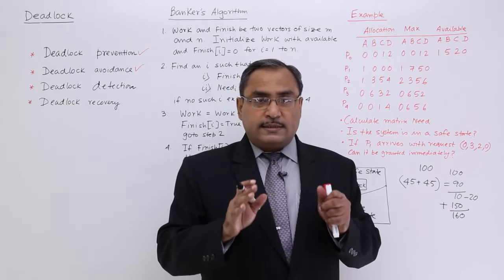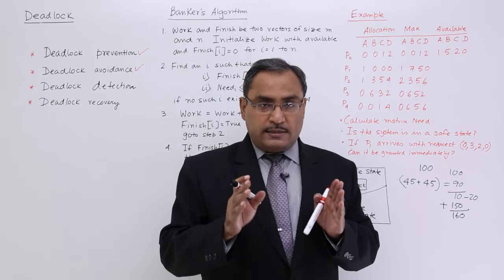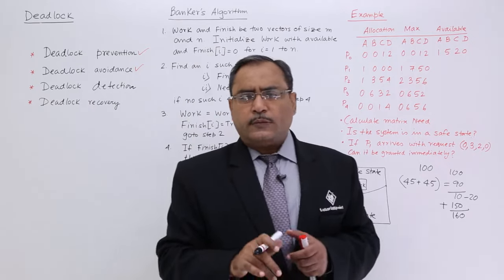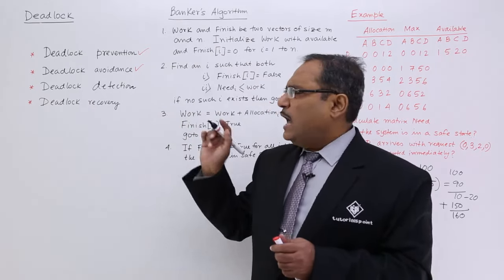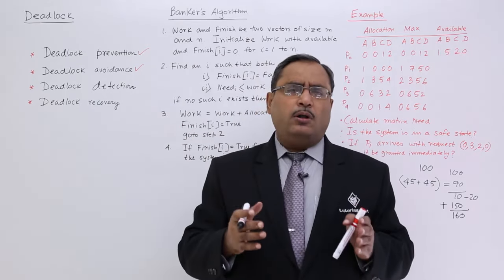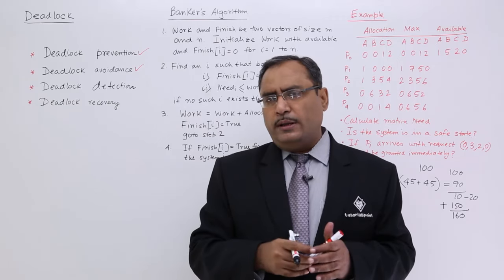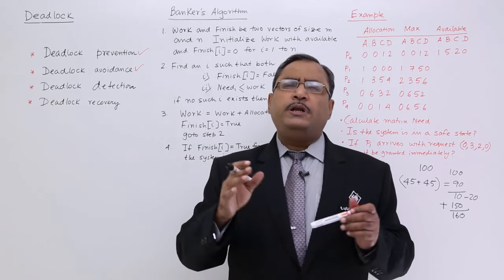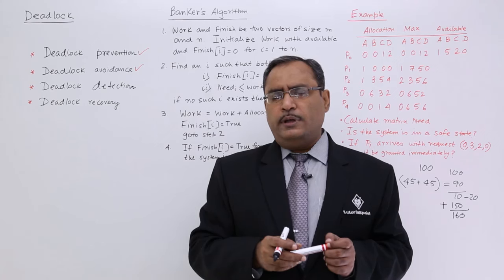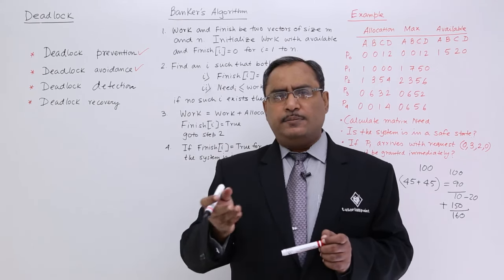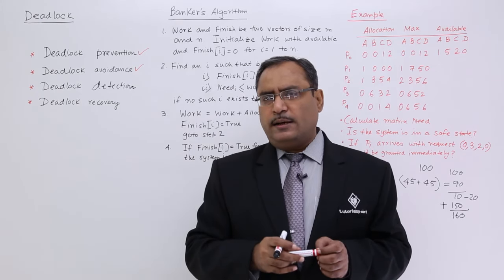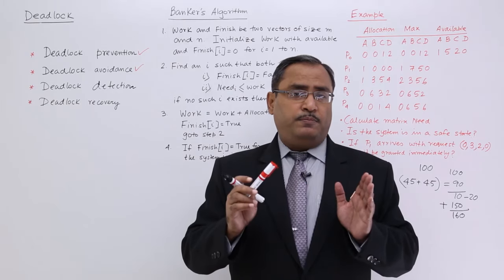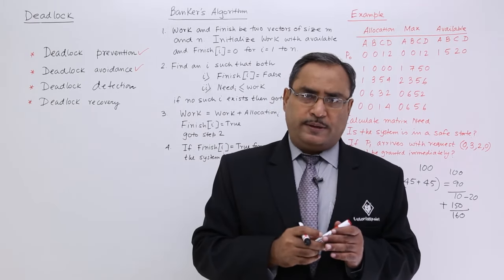The deadlock may also occur when another person comes to withdraw say 20 bucks from their account. So this is the safe state, unsafe state, deadlock and so on. For deadlock avoidance, to have the databases and all, we have one famous algorithm known as the Banker's algorithm.